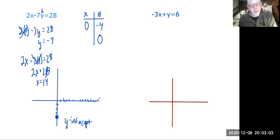So way out here at 14, we are going to have an x-intercept. So we have that point and then we can draw a line through the two points. All right, let's do one more example.